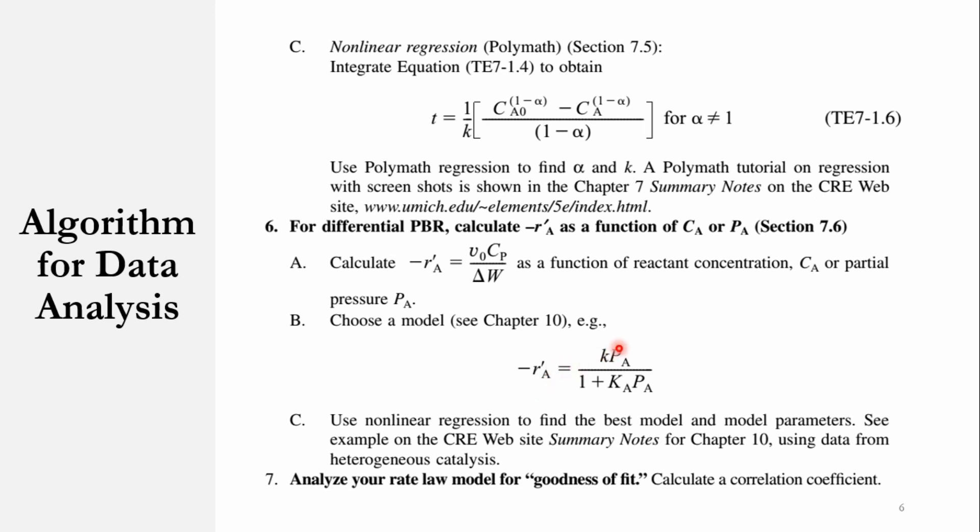Accordingly, -r'A = k·PA/(1 + KA·PA), where P is the partial pressure, this small k is the specific reaction rate constant, that capital K is the adsorption constant. And accordingly, in the same way, part C is the same as that of this: that you have to use the nonlinear regression. So what we will be doing is that we will be solving the batch system. Once we will be doing the initial part, then we have to go to chapter 10, first study the catalytic system, and then we have to come back to solve this point 6.